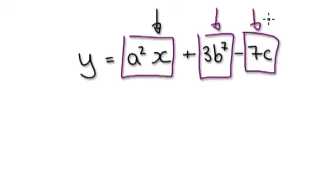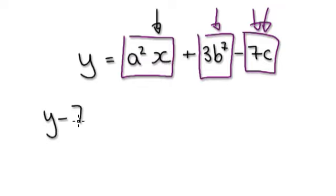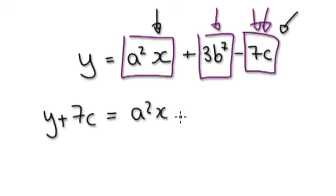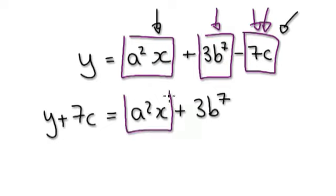Inside your mind, add this box. Remember, I'm asking you to make x the subject. Quite a while ago, you did something like this — you would add this block to both sides. This would be ax squared plus 3b to the power of 7.